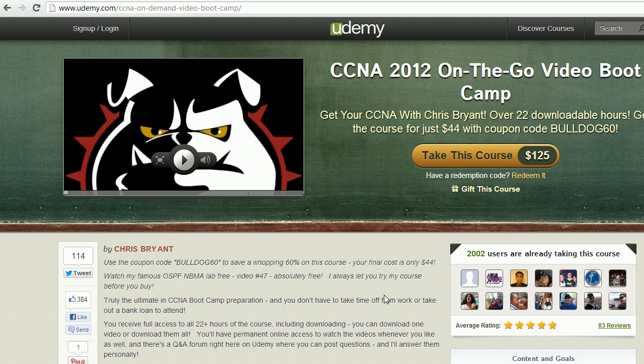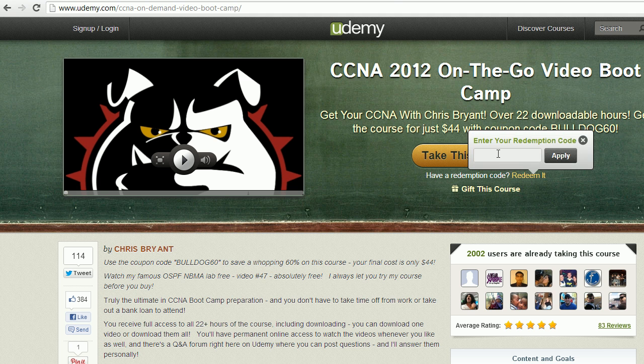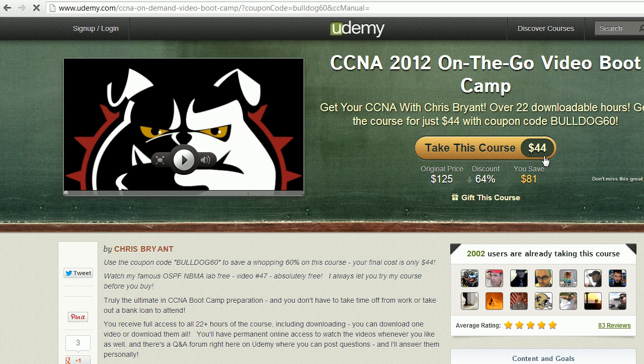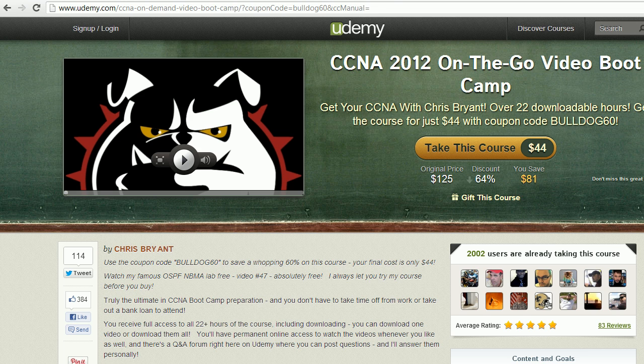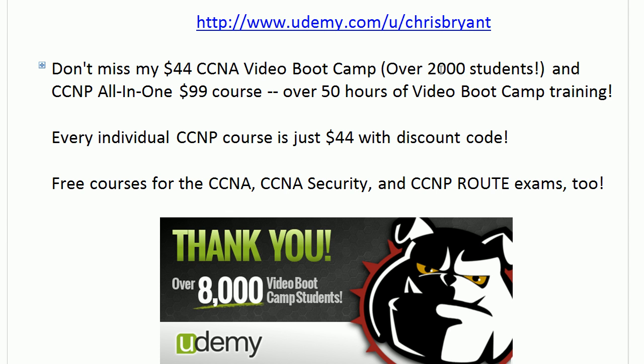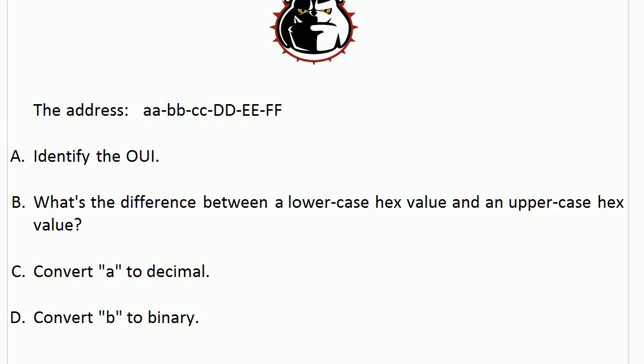We've got over 2,000 students in my CCNA course right now, and when you put in the discount code bulldog60 and just click apply, you're getting in for 44 bucks. That's about $2 an hour for my world-class CCNA training. You definitely want to get a hold of that because 2,000 people already have. Now, let's go back to this question.